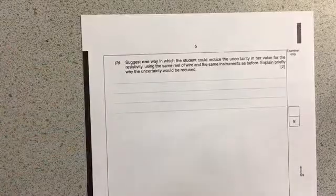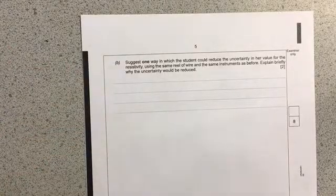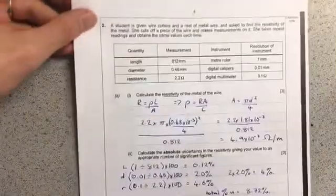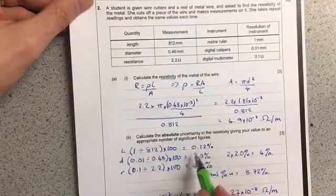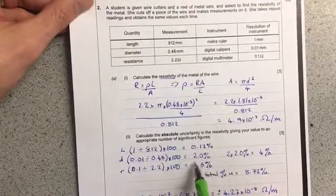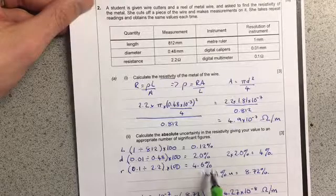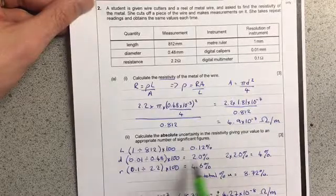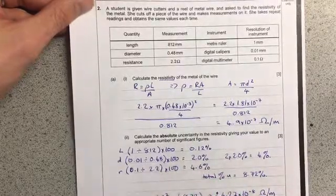Lastly, it asks to suggest one way to improve this. You'll notice the length uncertainty is tiny, while resistance is the biggest. Improving that one will have the biggest overall effect. Diameter could also work, but explaining that is harder.